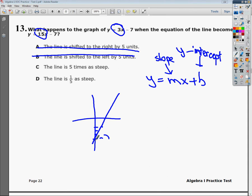If you go up 15 and over 1, you're really looking at going up to like right here. That's significantly steeper. In fact, it's 5 times as steep. So the answer to number 13 is C.